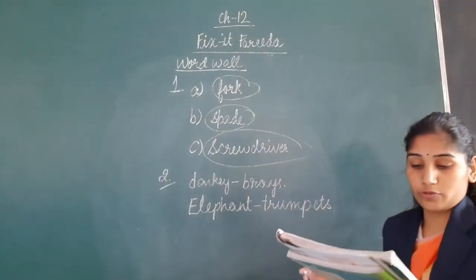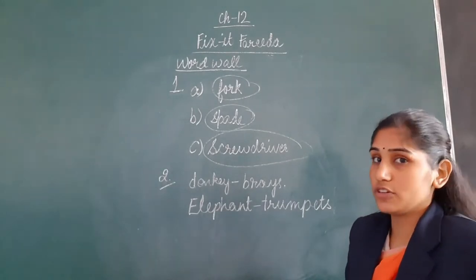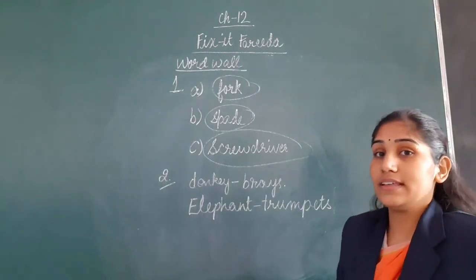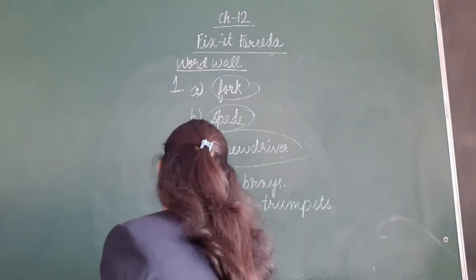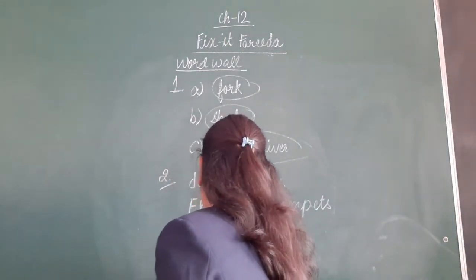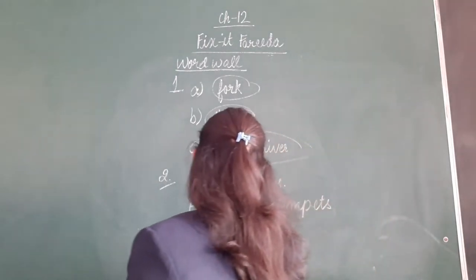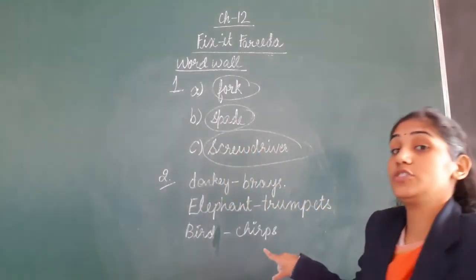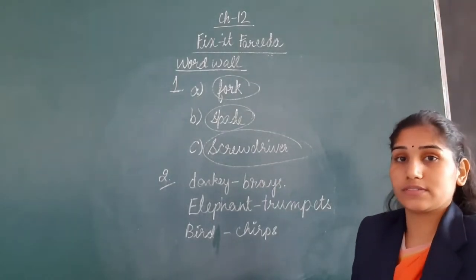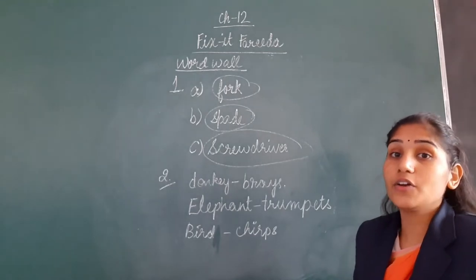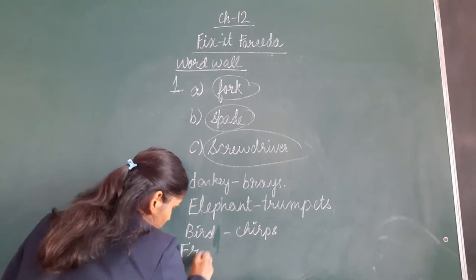Now we will move to the next part: chirps. You know that birds make a chirping sound. So we will write birds chirp. Now, croaks. A frog makes a croaking sound. So we will write frog croaks.